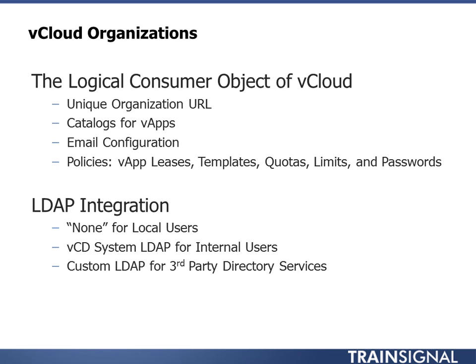vCloud Director gives you three ways to provide authentication. The first is essentially no LDAP — using local users. This isn't used often; I typically like to have one local user as a backdoor in case LDAP is down, but you don't want to hand out lots of local users because it's not scalable. The second is the system LDAP for internal users, and the third is custom LDAP for third-party services. The difference is whether the cloud consumer uses your LDAP or their own. System LDAP is common for private cloud, while custom LDAP is common when providing services to someone else.